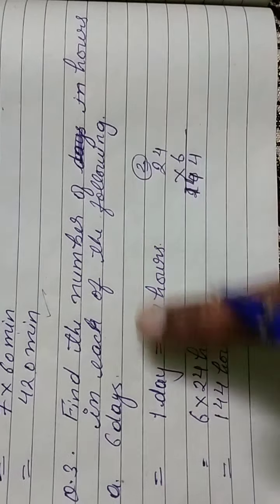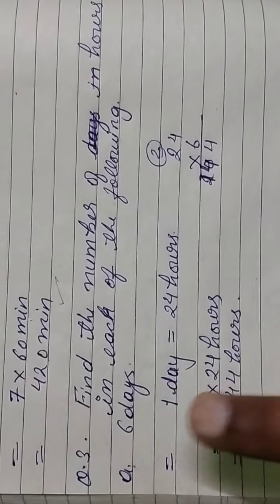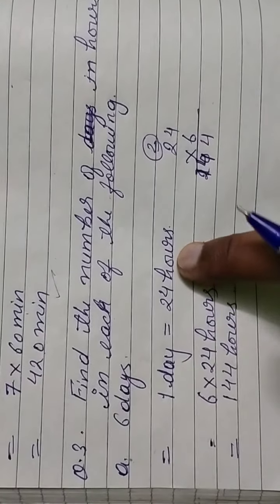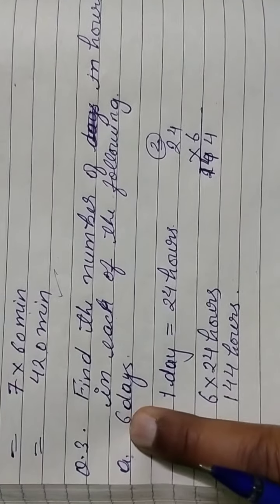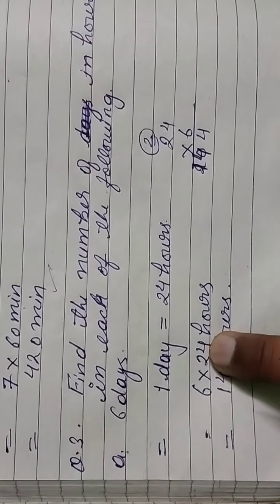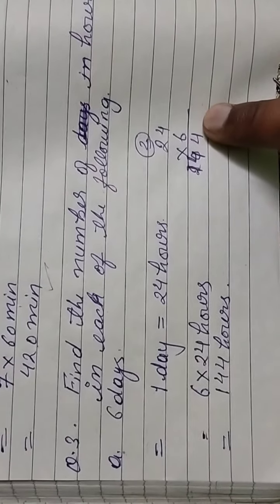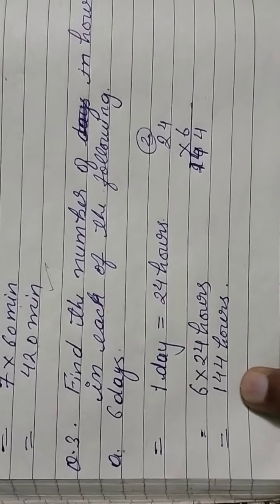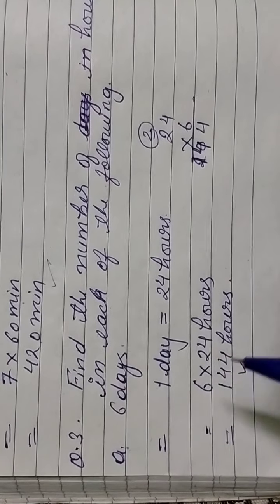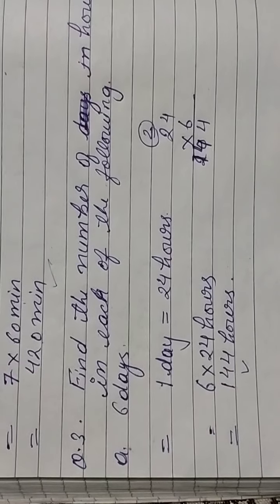Question number 3: Find the number of hours in each of the following. 6 days — we know 1 day equals 24 hours, so we multiply 6 × 24. After multiplication we get 144 hours — that is your answer. Again, before starting the exercise, you have to learn that chart.